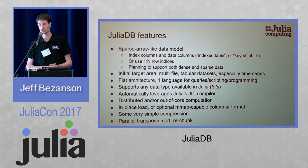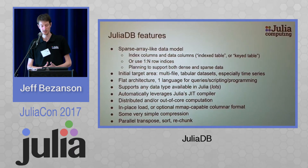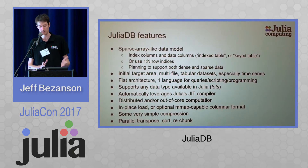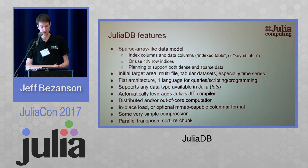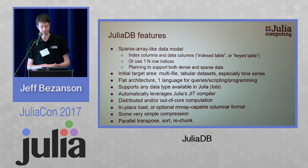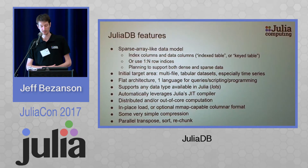I don't have to sell you on why you might want to do this with Julia. Given that it's done in Julia, you have lots of data types it can handle, and there's no mapping back and forth — it can handle everything. It can automatically leverage our JIT compiler, so if you type in a query with some anonymous functions composed together, that will get compiled and JIT-ed. And since we're using Shashi's Dagger package, it can do both distributed and out-of-core computation. We can load files in place, or we also have our own memory-mappable binary format.